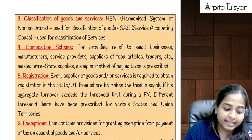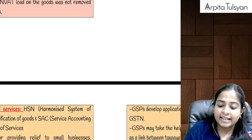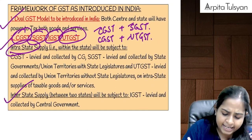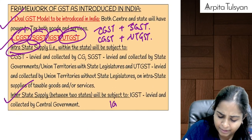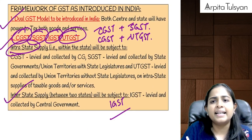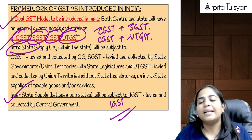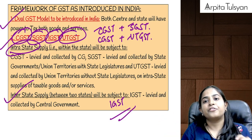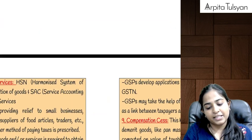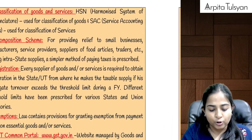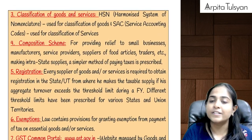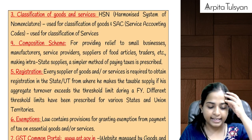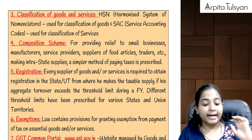In case of inter-state supply, there is only one tax applicable and that is your IGST. Further, this IGST will be divided into two parts — between the central government and the state government.